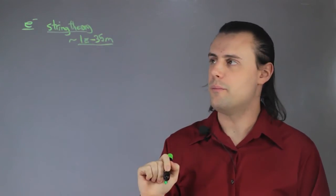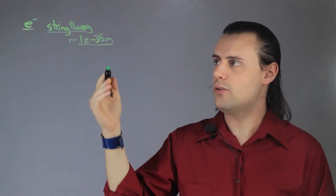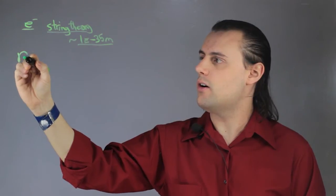This is very small. Classically, you can calculate the classical electron radius, which we would denote as r sub e.